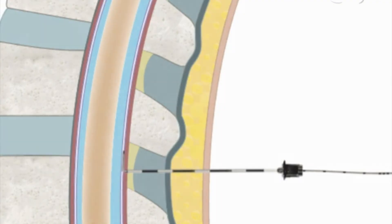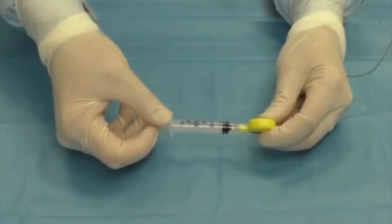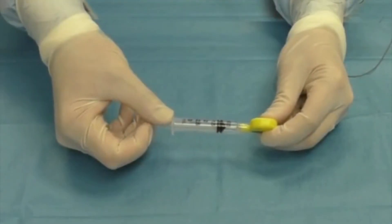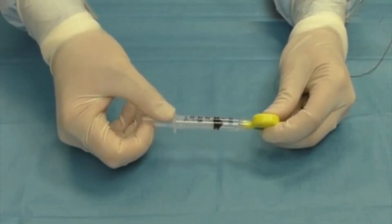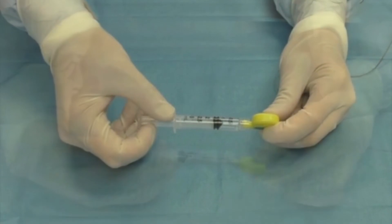Make sure that the catheter has not entered either the intrathecal or the intravascular space. This check involves two steps: first, aspirate the catheter with a syringe and look for blood or CSF. The absence of blood or CSF is a good indicator of correct placement, but it does not rule out intrathecal or intravascular placement.